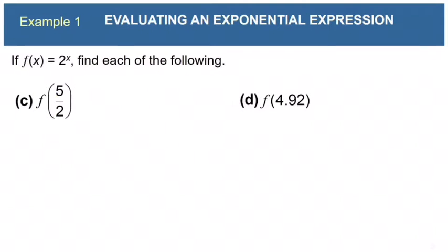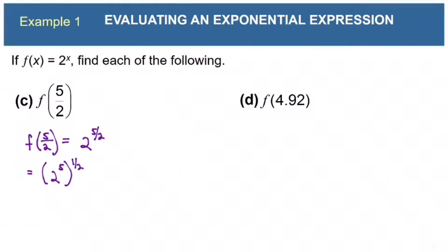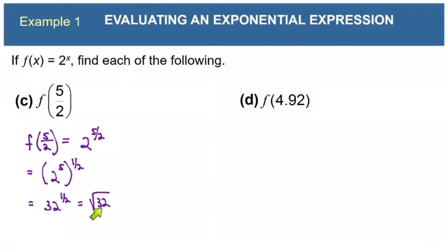Let's also look at f(5/2). So f(5/2) = 2^(5/2). Now we need to simplify this. We can write it as 2^5 to the 1/2 power, since 5 × 1/2 = 5/2. So 2^5 is 32, and the 1/2 power is the square root. So we have the square root of 32, which reduces because 32 = 16 × 2, and the square root of 16 is 4. So we get 4√2.